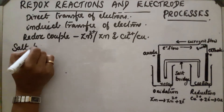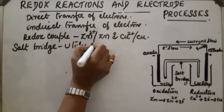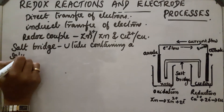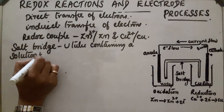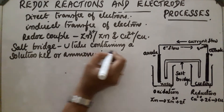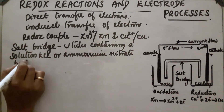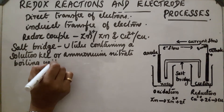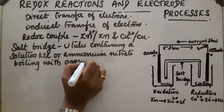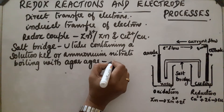The two beakers are connected by a salt bridge. A salt bridge is a U-tube containing a solution of potassium chloride or ammonium nitrate, boiled with agar-agar. On boiling with agar-agar it gets solidified and a jelly-like substance is obtained.